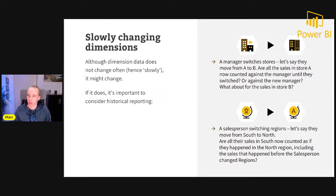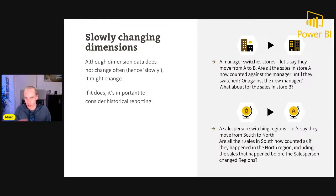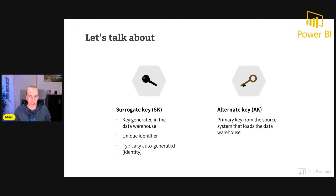Second example: a salesperson switching regions — moving from south to north. If the sales moves with the person, the sales manager for south will not be happy, as they may have reached their target, but now they didn't because all the sales moved with the salesperson. So where should you count this? This brings us to a topic related to keys in our data set: surrogate keys and alternate keys.